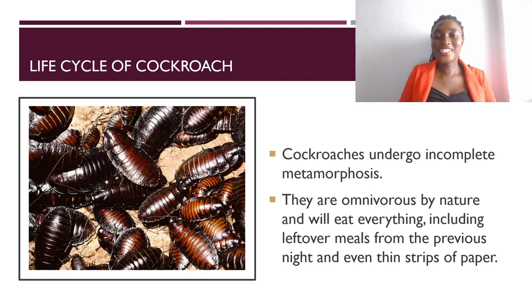To begin with, cockroaches undergo incomplete metamorphosis. When we talk about incomplete metamorphosis, we are looking at a life cycle which has three stages: the egg stage, the nymph stage, and the adult stage. More on that in our video on metamorphosis.